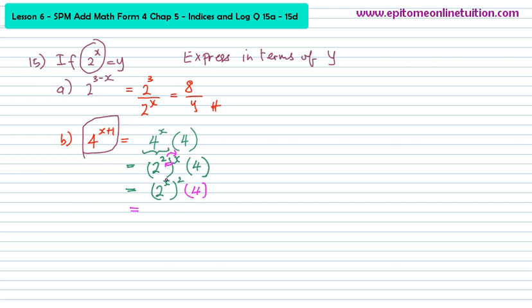So, I put 2x here and put a square there. And that's the 4 out here. So, what have I done? I have made 2 power x so that I can substitute y into this. So, this is a y. This is y squared. And there's a square there and 4. So, basically, 4 to the power of x plus 1 would equal to 4y squared if 2 power x is equal to y. So, you have successfully converted something to the power of x into something in terms of y, which is what the question wants.